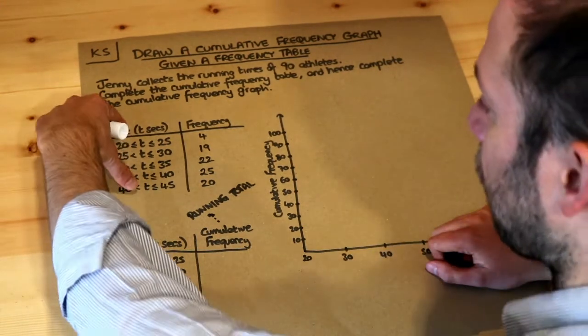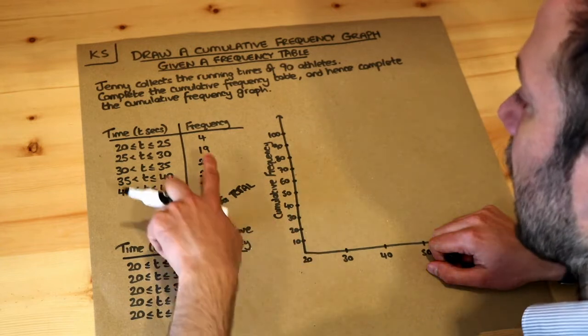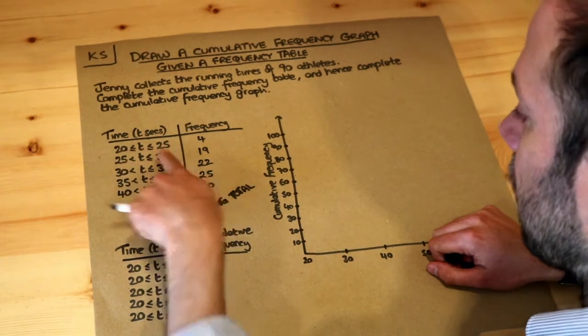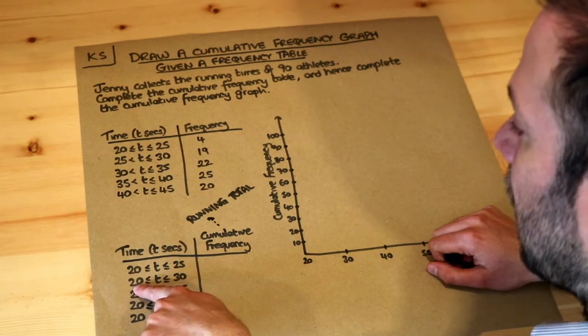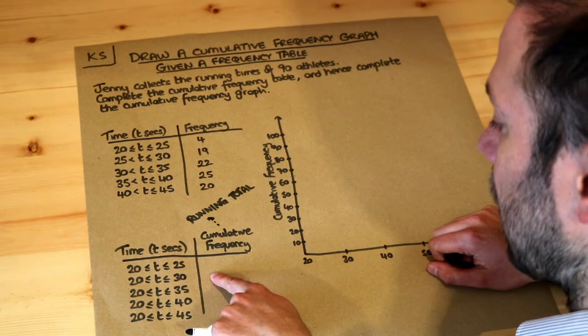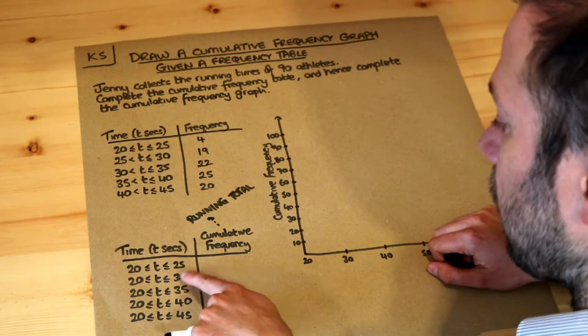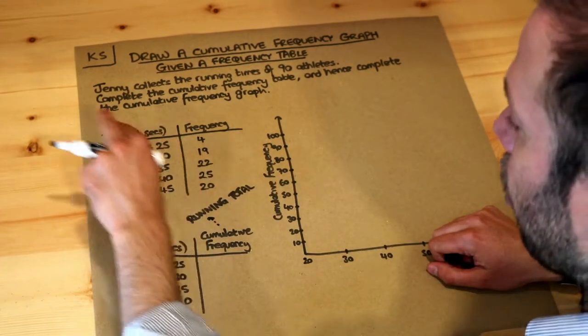And let's contrast this frequency table here with this cumulative frequency table here. Can you see with these first two groups you've got 20 to 25, 25 to 30 whereas with these groups here it starts from 20 because we want to say what's the running total of the times up to 30 from the starting value of 20 seconds because that's the lowest time in any of the groups.